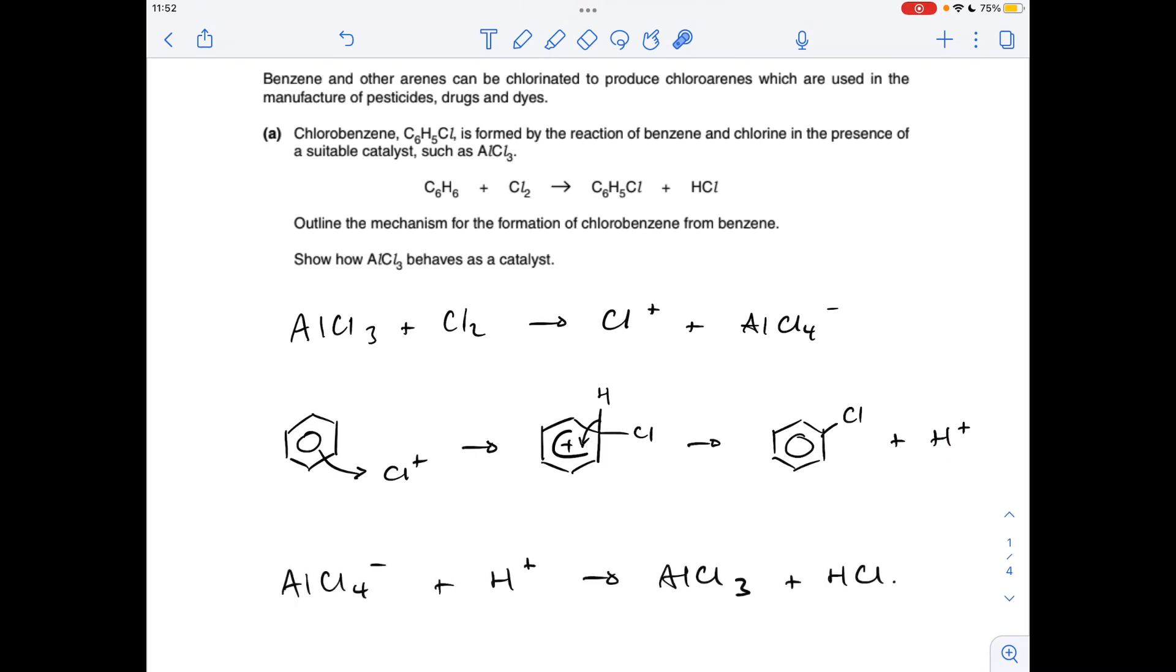And the final part of the mechanism to show how the AlCl3 behaves as a catalyst, we take the AlCl4- ion formed here, react that with the H+ ion, get the catalyst back, and we also make an HCl molecule.